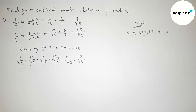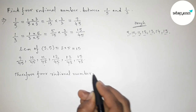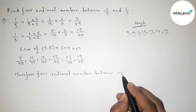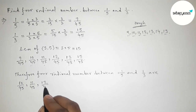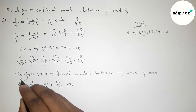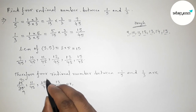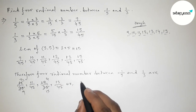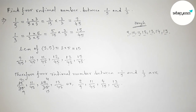Therefore, the 4 required rational numbers between 1 by 5 and 1 by 3 are: 10 by 45, 11 by 45, 12 by 45, and 13 by 45. We can also simplify: 10 by 45 equals 2 by 9, and 12 by 45 equals 4 by 15. So the answer is 2 by 9, 11 by 45, 4 by 15, and 13 by 45. That's all — thanks for watching, please share it.